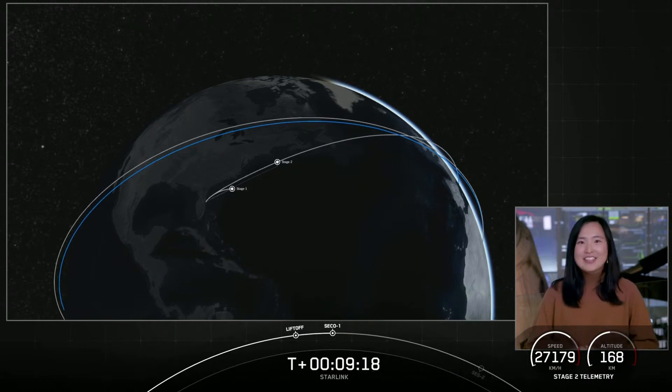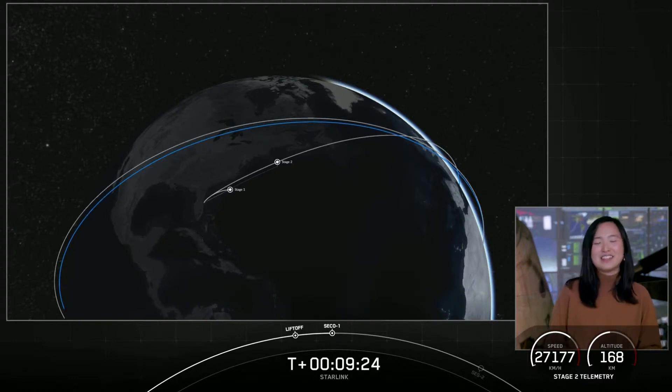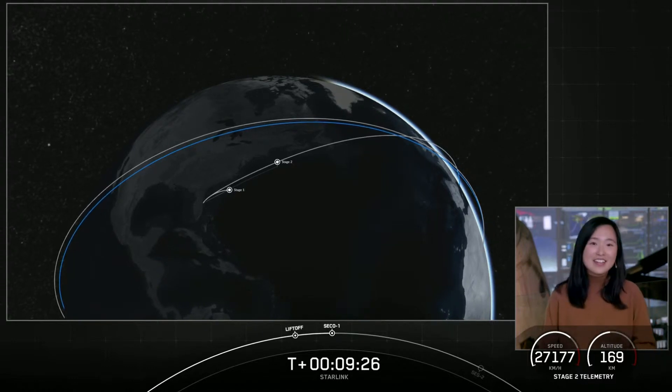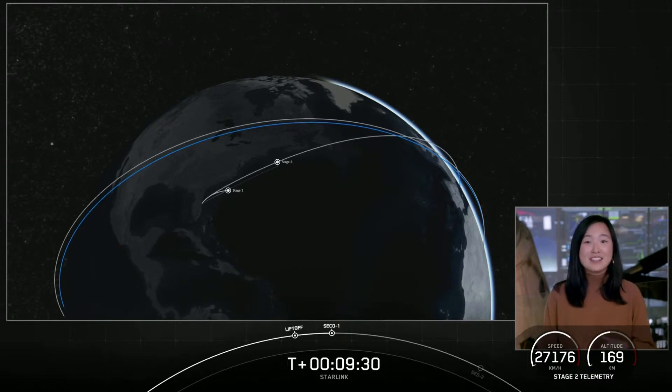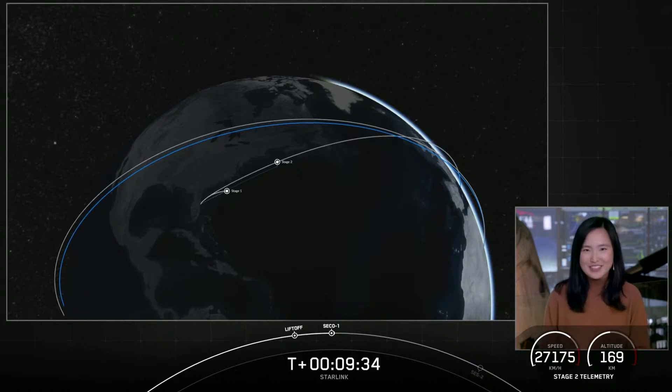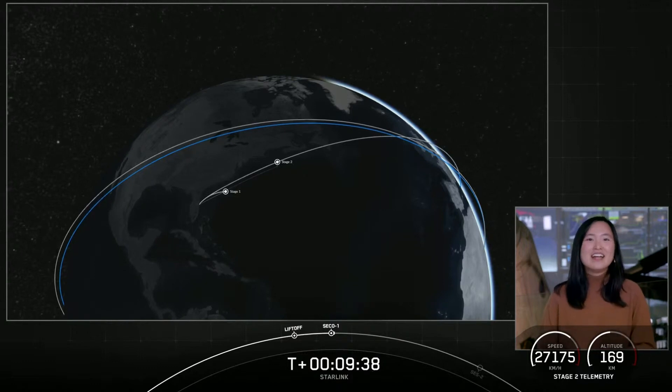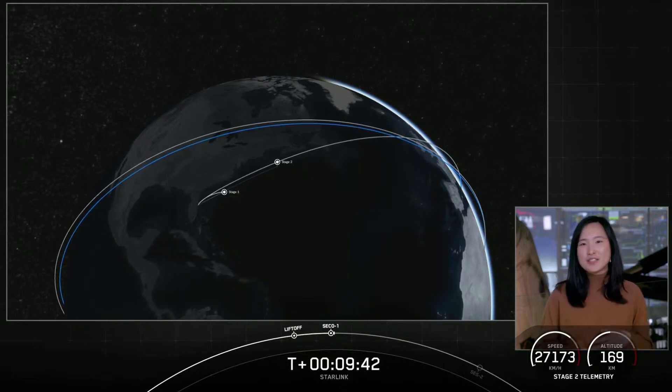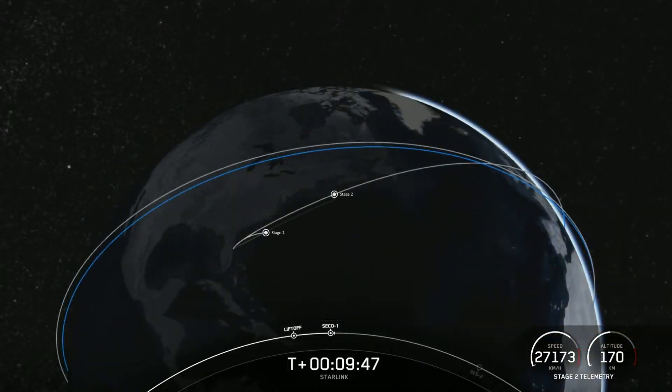And in just a few seconds here, you're going to hear the call out for... Well, we just had a call out for SECO-1, in fact, for our second stage and a confirmation for a good orbit. And now that stage two is going to coast in this orbit for the next 35 minutes or so. And while that happens, we'll take a look at this animation showcasing where we are in the coast phase. And we'll see you back here at T plus 45 minutes for a second stage relight. Thank you so much.